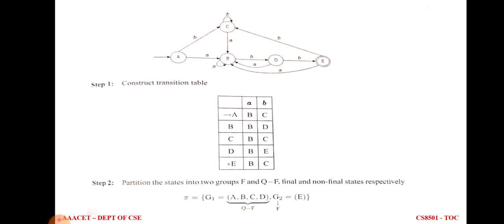For each state and each input symbol, we write the reachable state from the transition diagram. For example, state A on input a goes to state B, so we write B in that cell. State A on input b goes to state C, so we write C in the corresponding cell. Similarly, we fill the reachable state for all states and both input symbols.